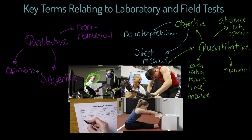Qualitative data relates to opinions and interpretations, and it's typically linguistic. You might get qualitative data from observing a performer — for example, looking at someone and saying 'I think she enjoyed that' or 'I think she really valued the sit and reach test.' That is qualitative, opinion-based data. If I asked her out of 10 how much she enjoyed it and she said seven, that's actually quantitative. But if she said 'I really enjoyed it and felt my score was better,' that's qualitative data.